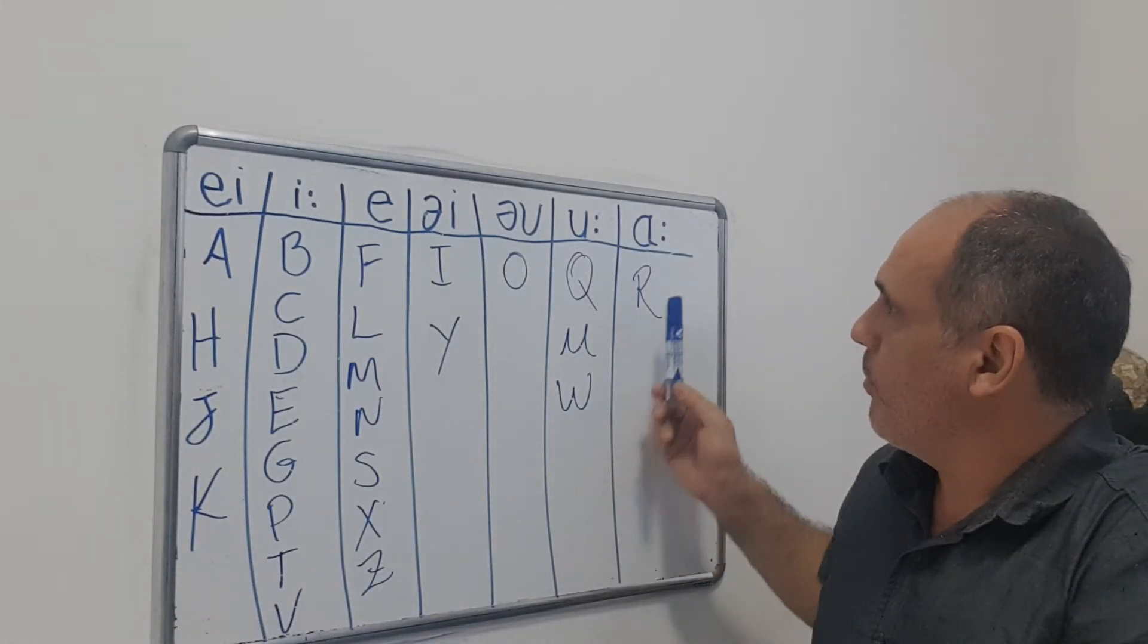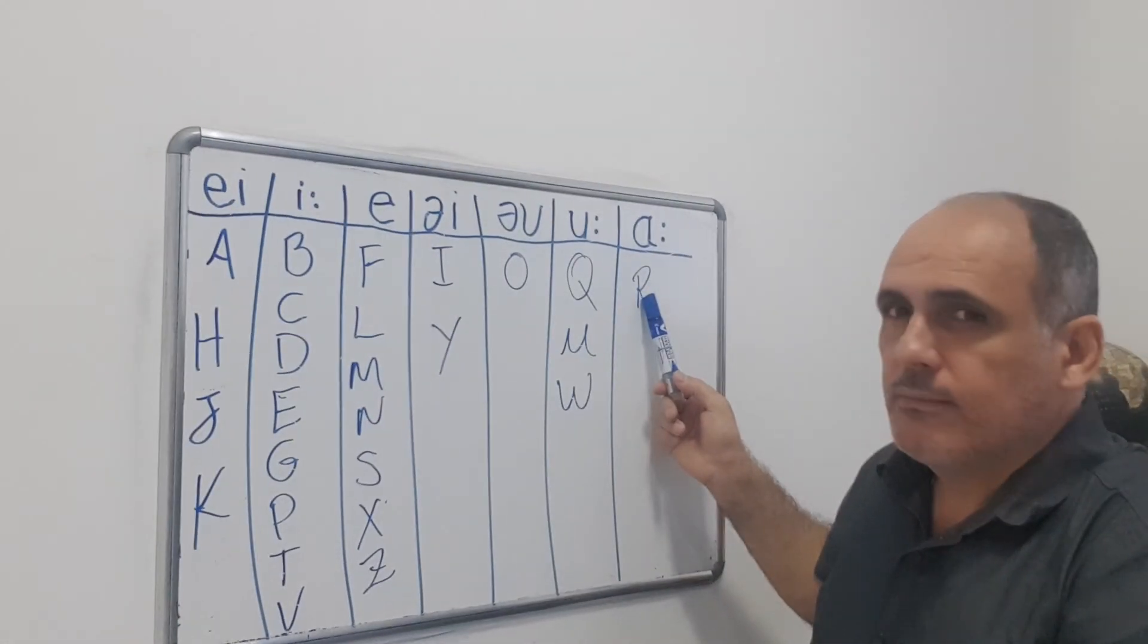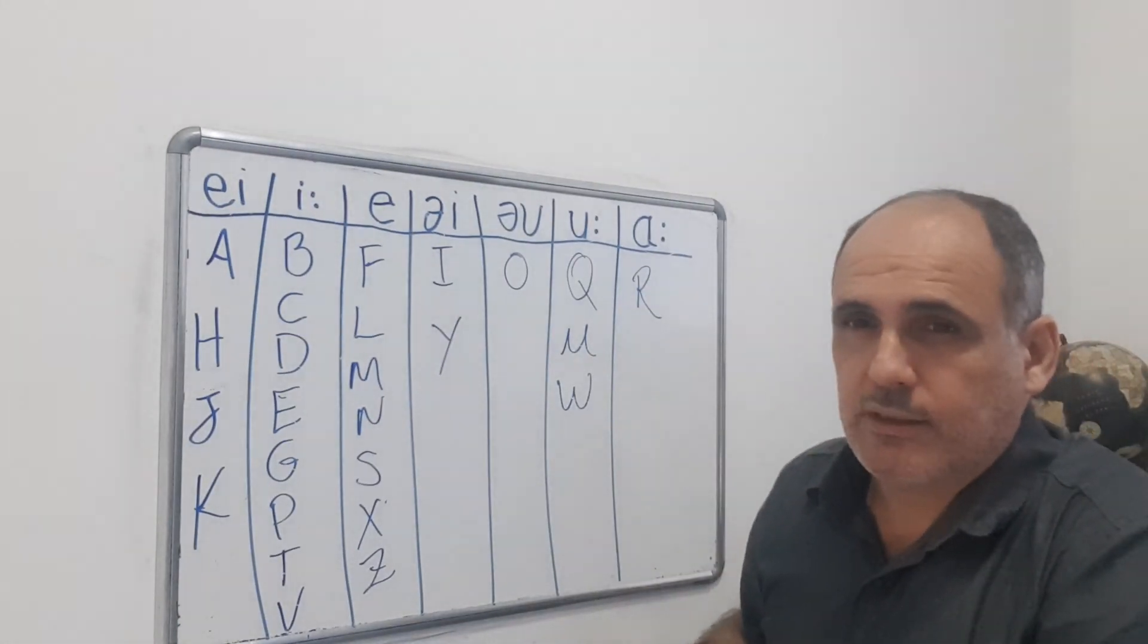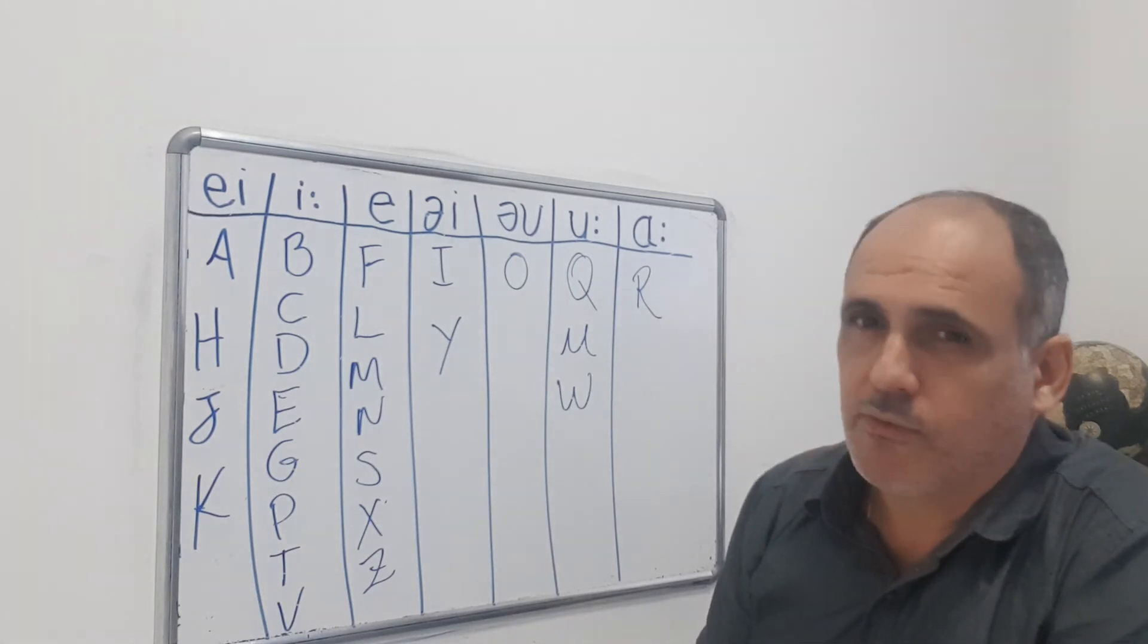E finalmente o R. Então pessoal, essas foram as letras do alfabeto, the alphabet letters. See you next video. Bye bye.